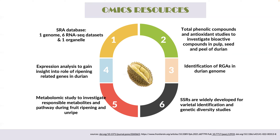For the SSRs or molecular markers, SSRs are widely developed for varietal identification and genetic diversity studies in durian. This is important because some durian varieties, cultivars, or species are quite difficult to differentiate based on their morphological characteristics. That is why we need molecular markers such as SSRs or SNPs to differentiate the varieties or species.